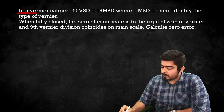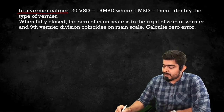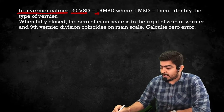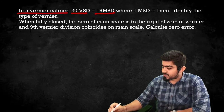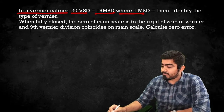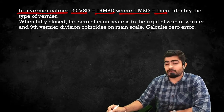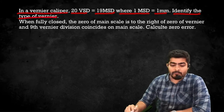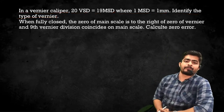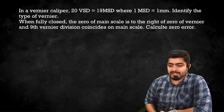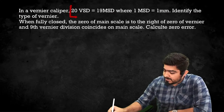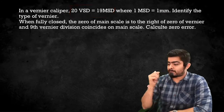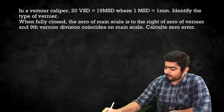In a Vernier Caliper, 20 Vernier Scale Divisions are equal to 19 Main Scale Divisions, where 1 Main Scale Division equals 1 mm. Identify the type of Vernier. Just on this basis you can tell which type of Vernier it is — try it.